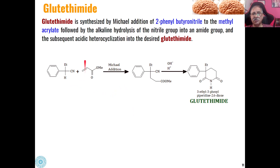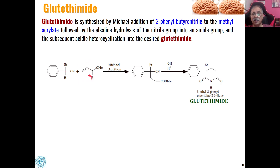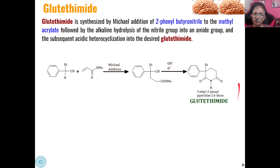Then is Glutethimide. Glutethimide can be synthesized from the Michael addition reaction of 2-phenylbutyronitrile to butylacrylate. The active methylene compound generates a carbanion which undergoes 1,4-Michael addition, giving a cyano ester. This cyano ester then undergoes hydrolysis and cyclization to give Glutethimide as the product. This piperidine-2,6-dione derivative is called Glutethimide.